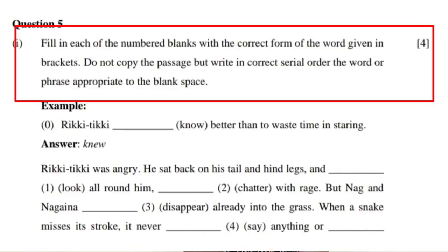The grammar portion has overall 20 marks. Question 5 has 4 sub-questions. The first sub-question asks you to fill in each numbered blank according to the instructions given. You have an example — a zeroth example — and you have to check which tense is already used in the example.